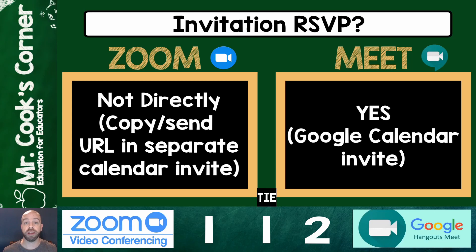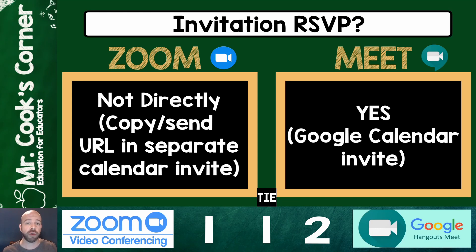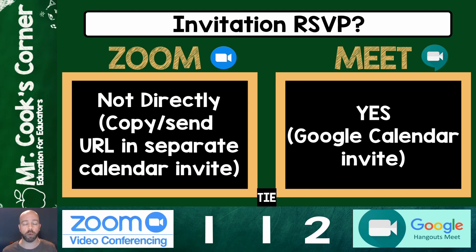When we talk about invitation RSVPs, this is actually a pretty major difference. With Google Meet, it's very simple to do an RSVP system. You go into Google Calendar, set the date and time, click on video conferencing, and there's an option to enter email addresses and send invites directly — this is huge. With Zoom, you can still invite people, but all you can do on their website is get a URL where you have to copy the address, then go into your own email system — whether that's Outlook, Gmail, or Yahoo — create an email, add the participants, and paste the address. To me, that's way more steps and it's very inconvenient. So in this case, definitely Google Meet.